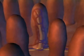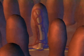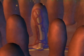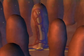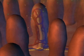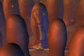Each villus contains capillaries and a lymph vessel. The products of fat digestion enter the lymph vessel. All other nutrients enter capillaries.